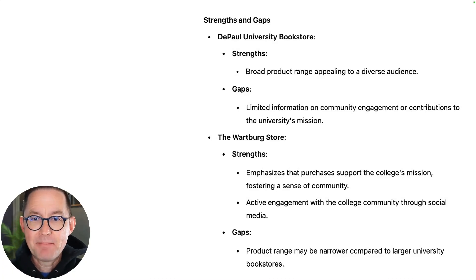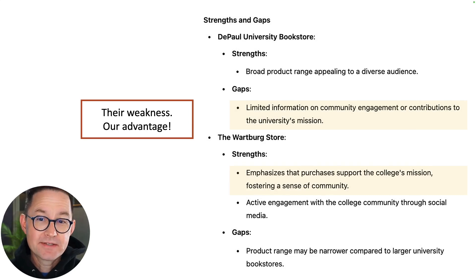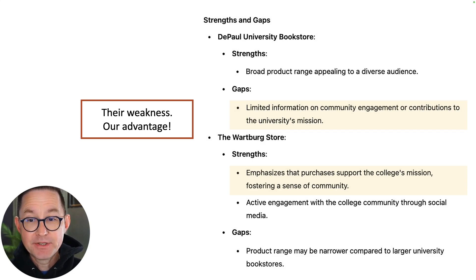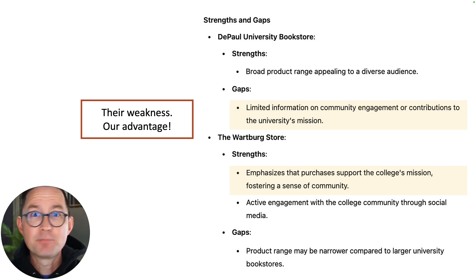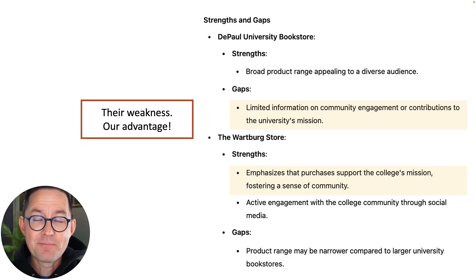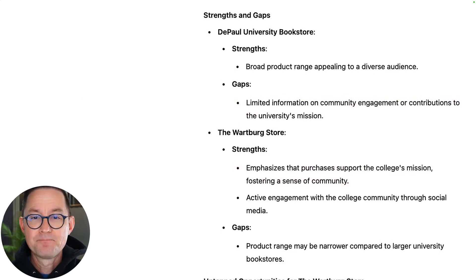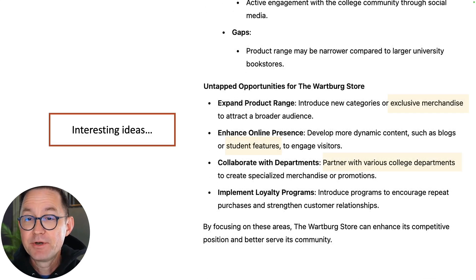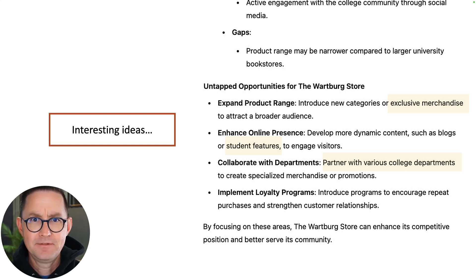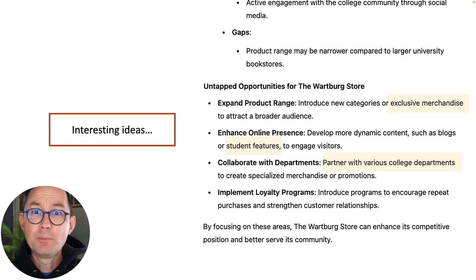It identifies quickly that one of these sites gives limited information on community engagement, but the other has an opportunity to better engage by showing that the site aligns with the college mission — that all transactions at this bookstore support the mission of the university, really community-focused. Impressive to get that just from the two sitemaps. Next, it provides untapped opportunities, suggesting we create exclusive merchandise — a great idea — or feature students.